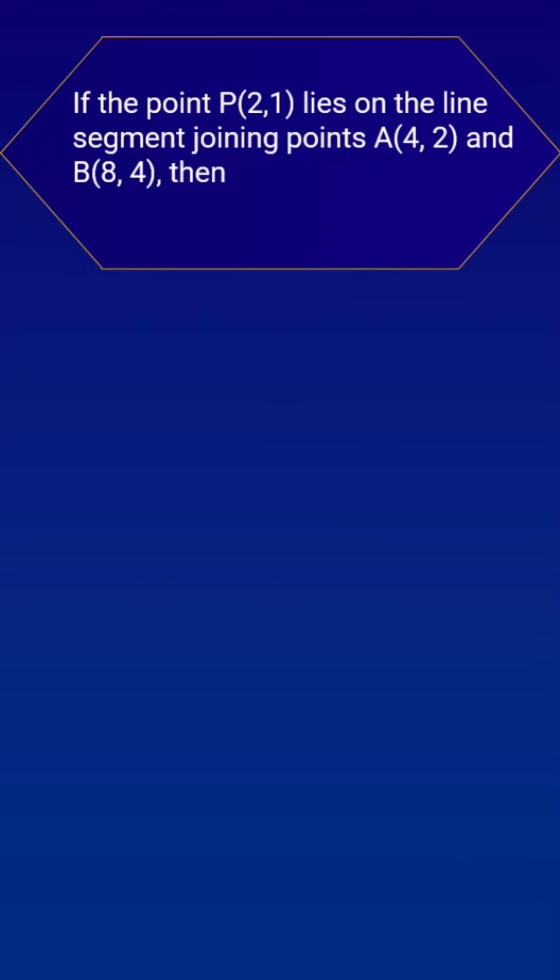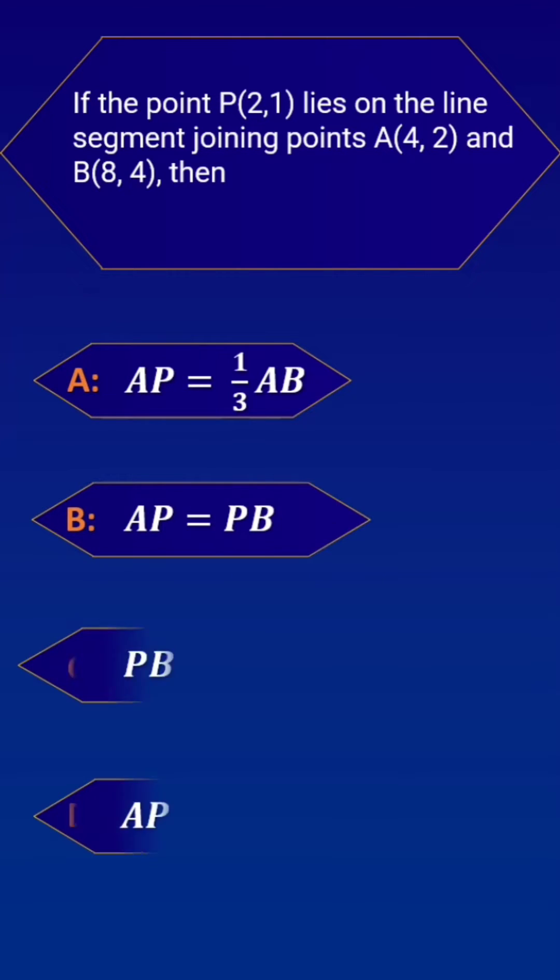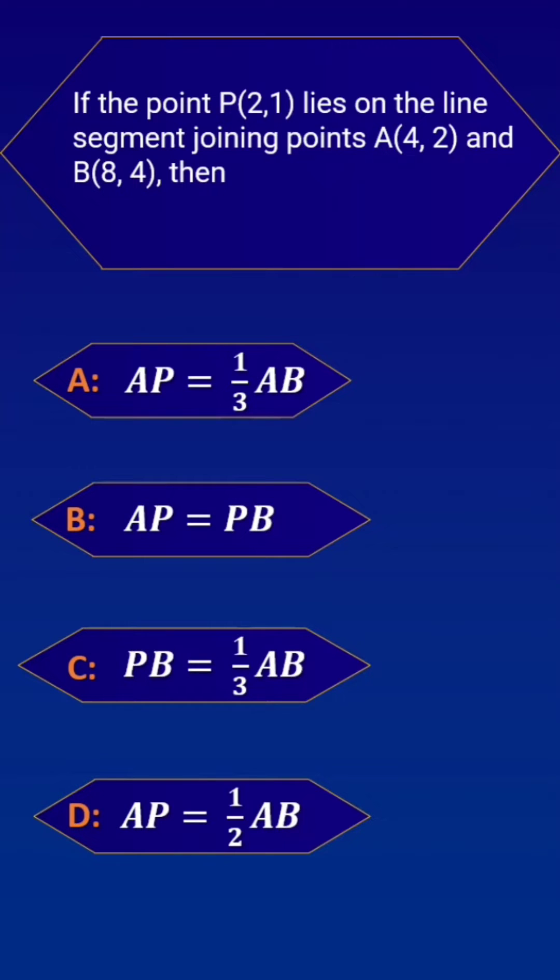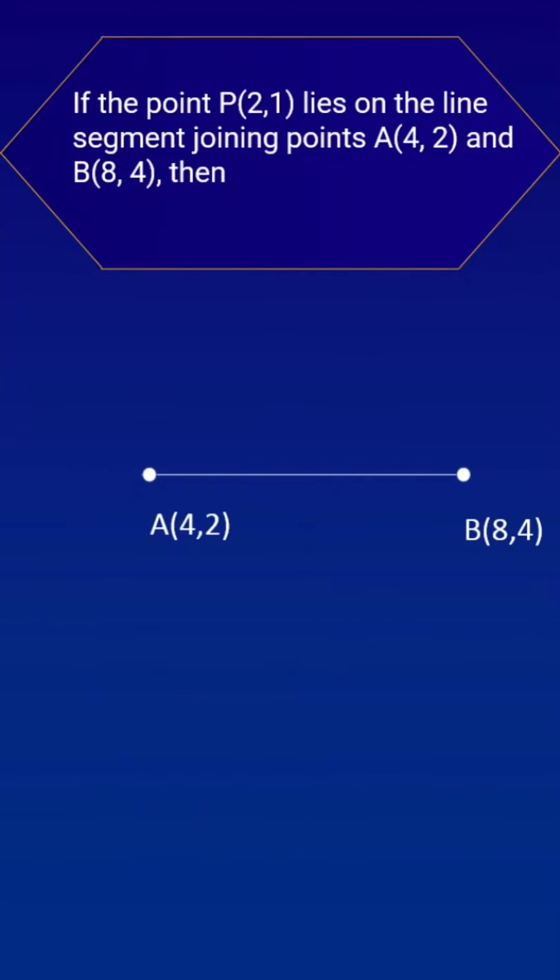The point P(2,1) lies on the line segment joining the points A(4,2) and B(8,4). Four options are given here. By looking at the options, we can say that we have to find out the ratio in which the point divides the line segment.